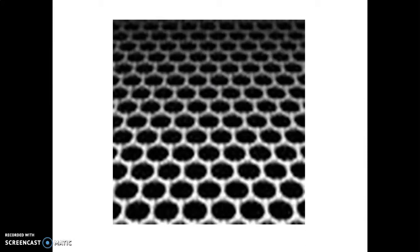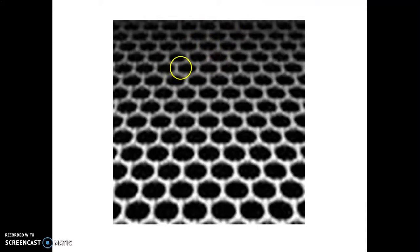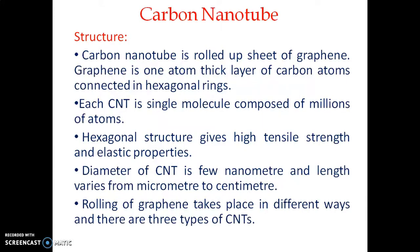To understand how thin graphene is, consider a sheet of paper. A paper sheet consists of millions of atomic layers, and paper is already very thin. Graphene has only one atomic layer, so you can imagine how thin it is. When this thin sheet of graphene is rolled up, we get a tube-like or cylinder-like structure — and that is called a carbon nanotube.